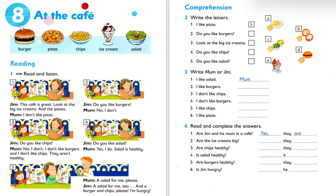Unit 8: At the cafe. Food vocabulary: burger, pizza, chips, ice cream, salad.